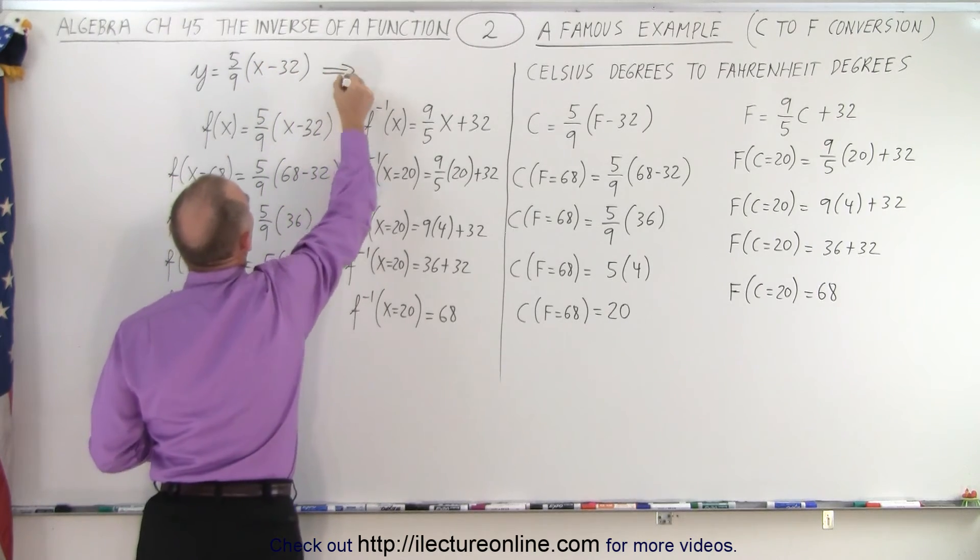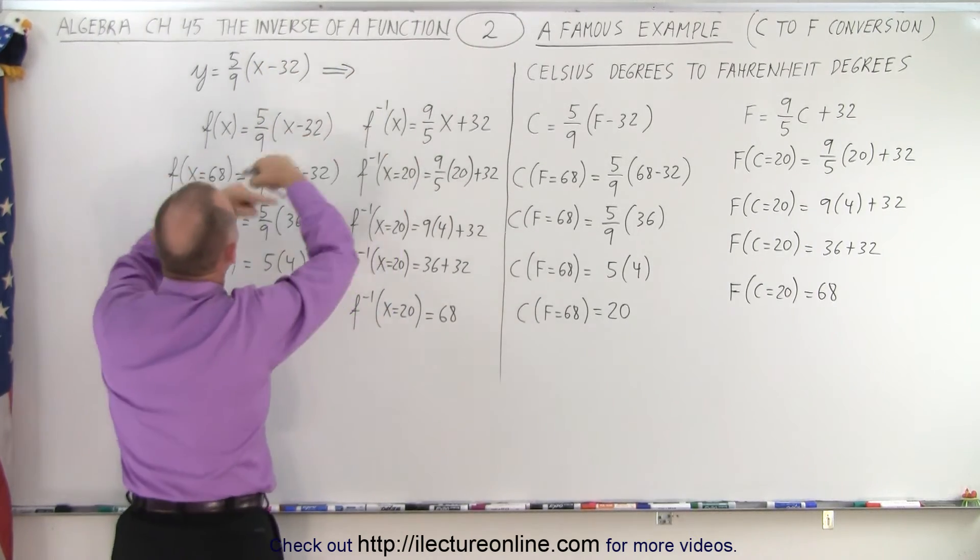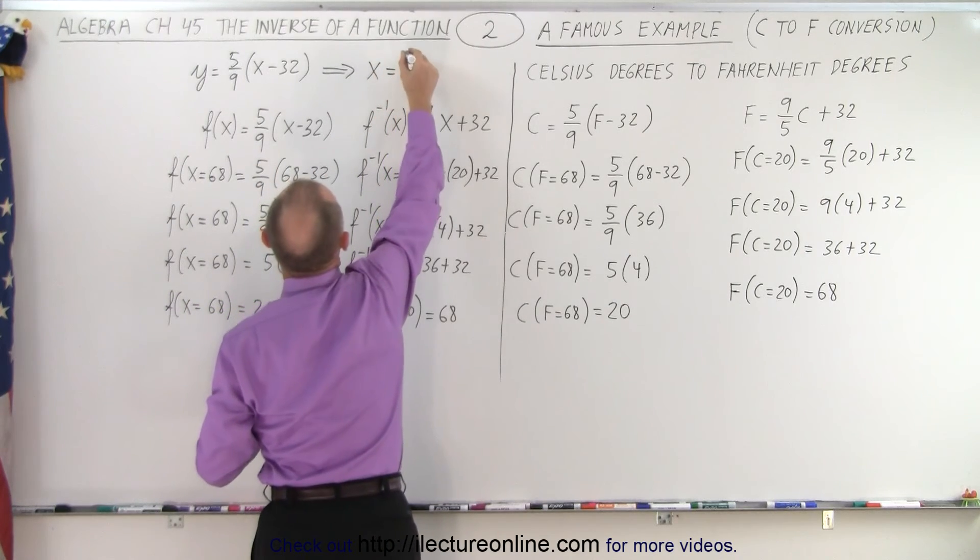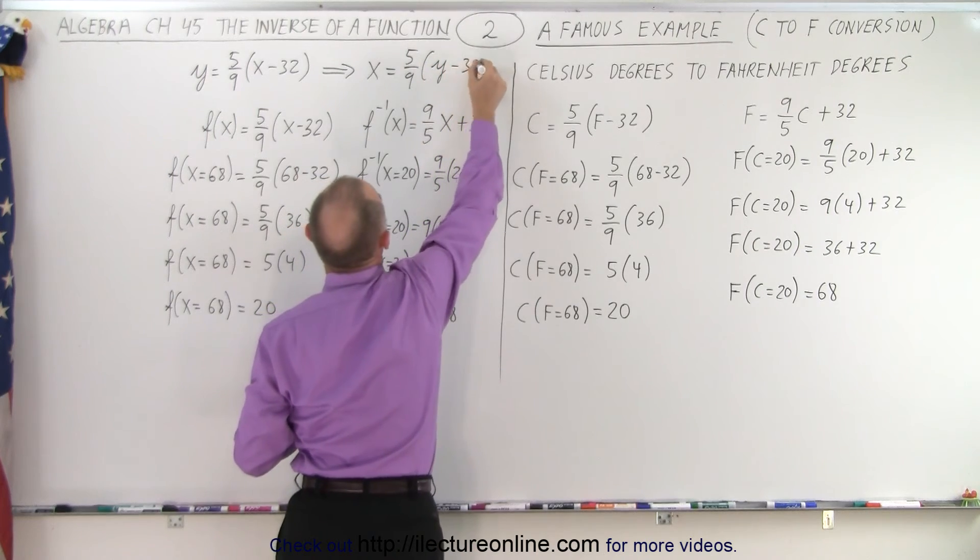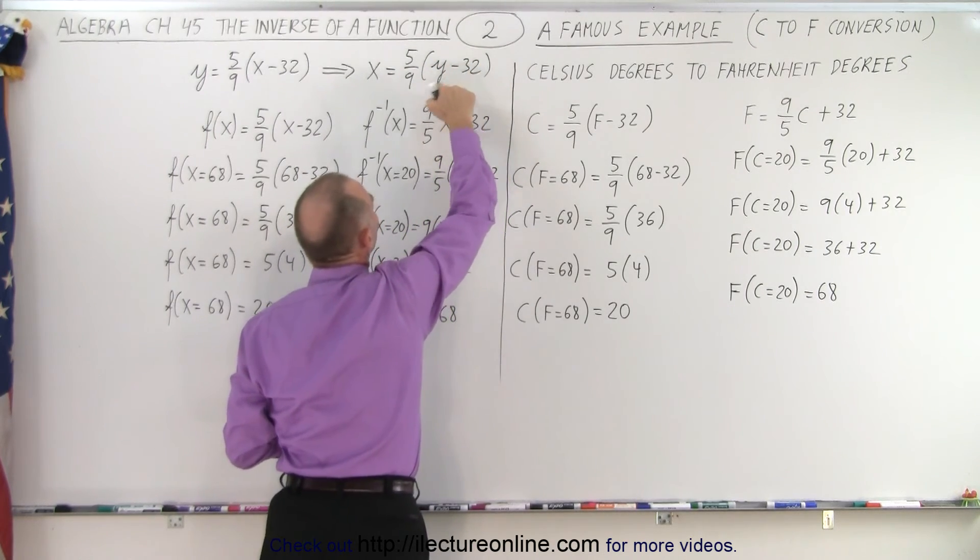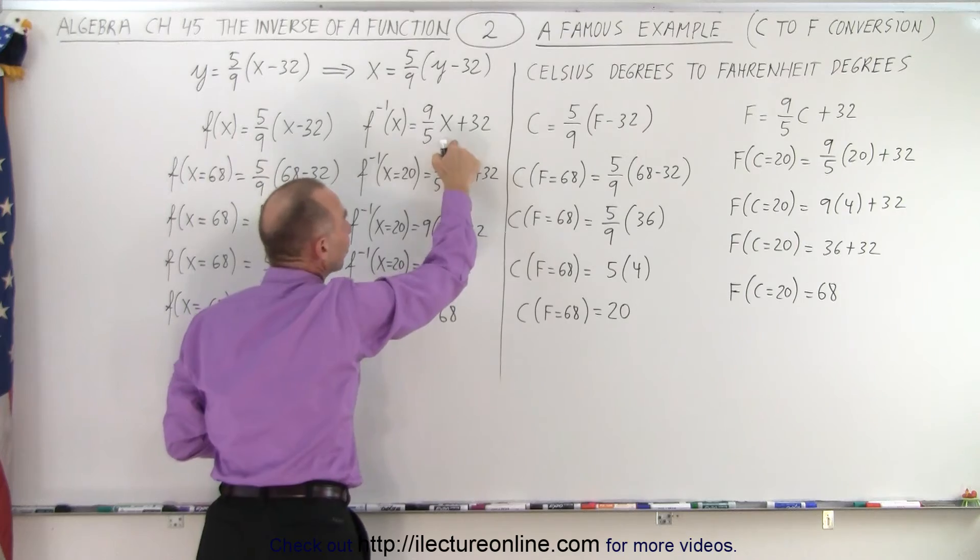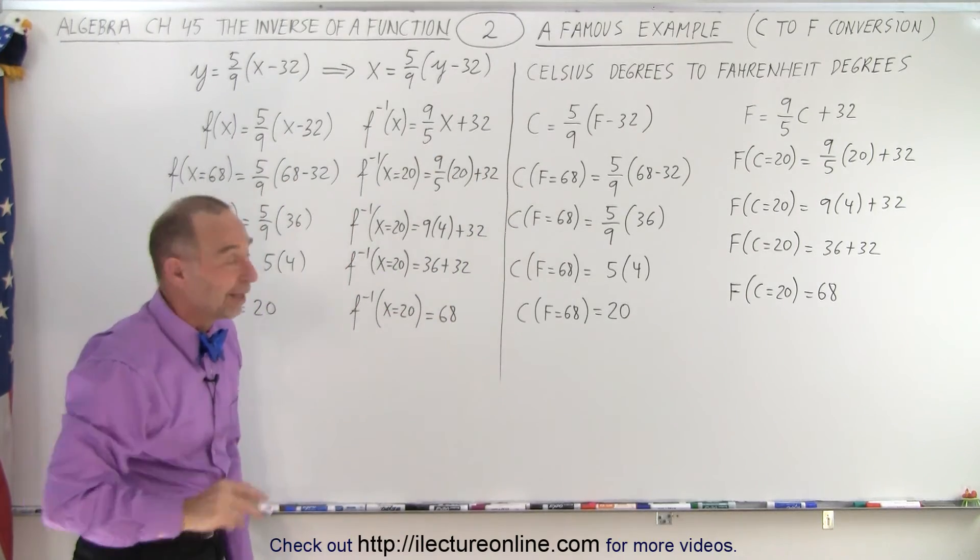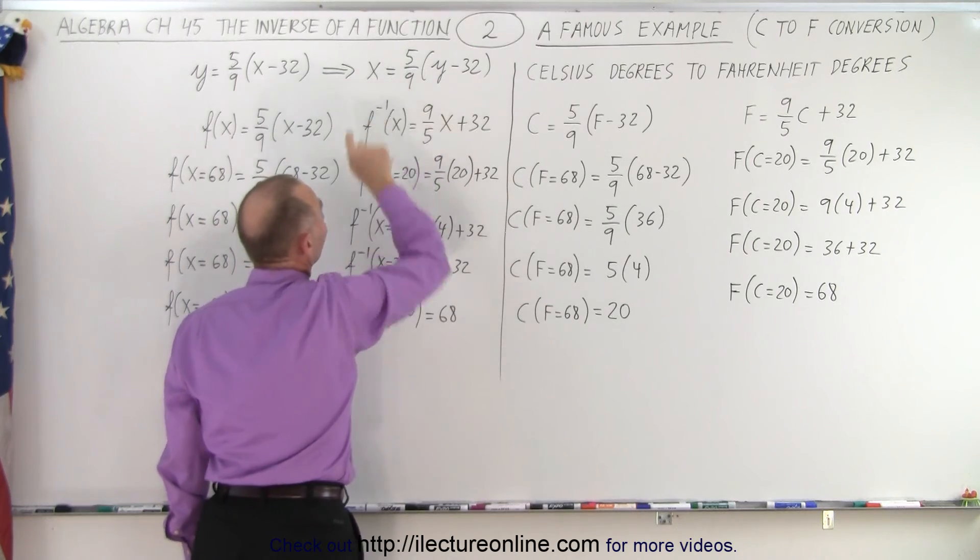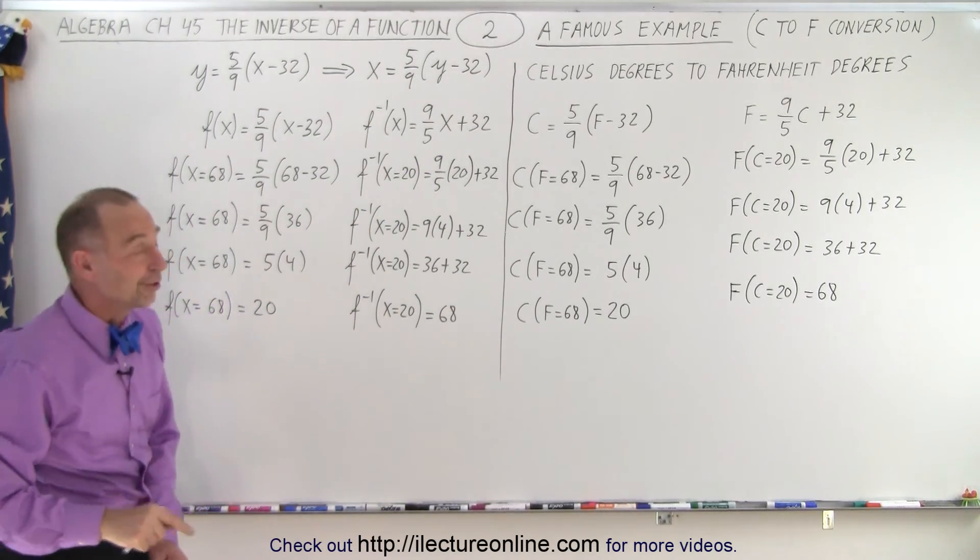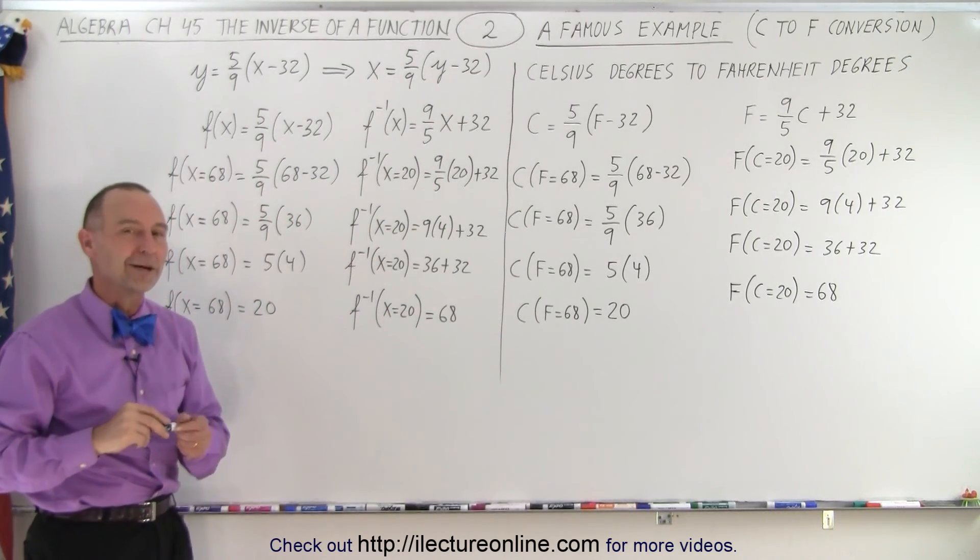And then to find the inverse we're going to exchange the x and the y. So we write this as x is equal to 5 over 9 times (y minus 32). And then if we solve that equation for y, we'll get this equation. Why don't you try it at home and see if you can do it. Simply solve this equation for y and you get this. I'll show you how to do it on a later video but see if you can figure this one out.